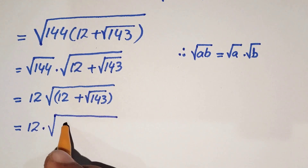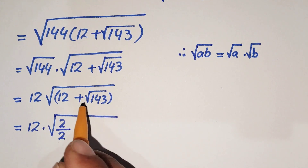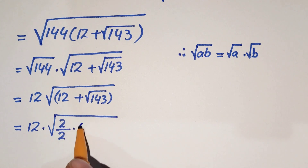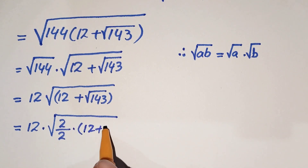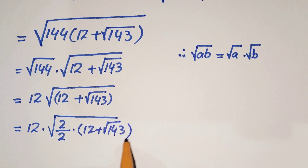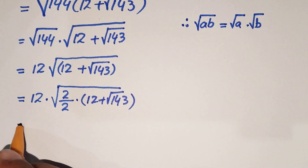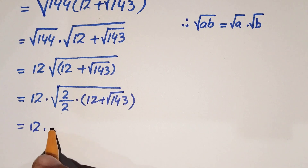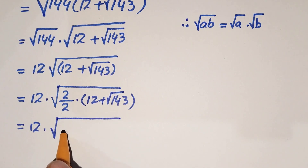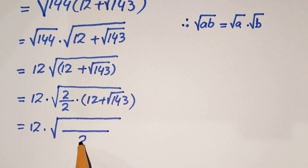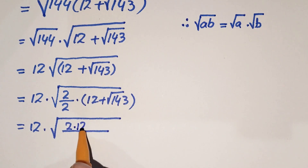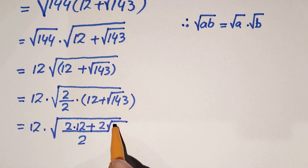Multiplying and dividing by 2 inside the square root, we get 12 times the square root of all over 2, where the numerator becomes 2 times 12 plus 2 times square root of 143, giving 24 plus 2 times square root of 143.